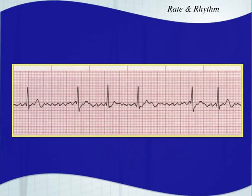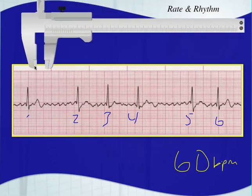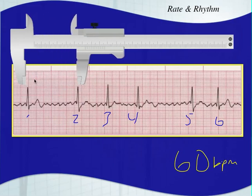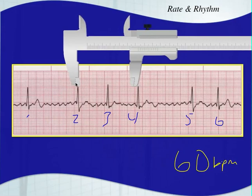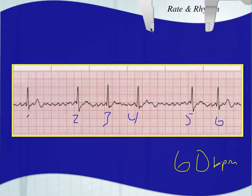This rhythm is also irregular, so we use the six-second method again. Counting the complexes: one, two, three, four, five, six — that gives a heart rate of 60 beats per minute. And again, we said it was irregular. You can see there's no pattern — this is a very irregularly irregular rhythm.